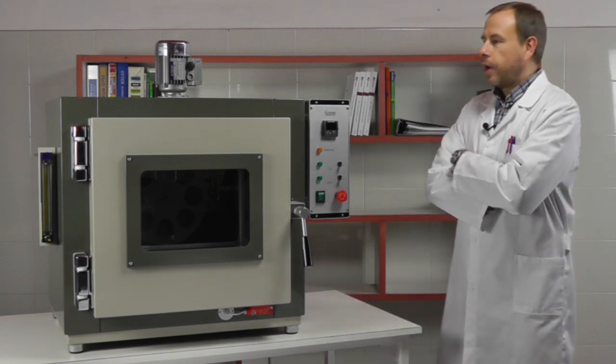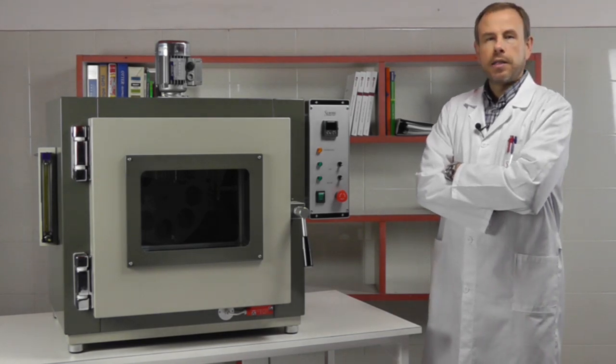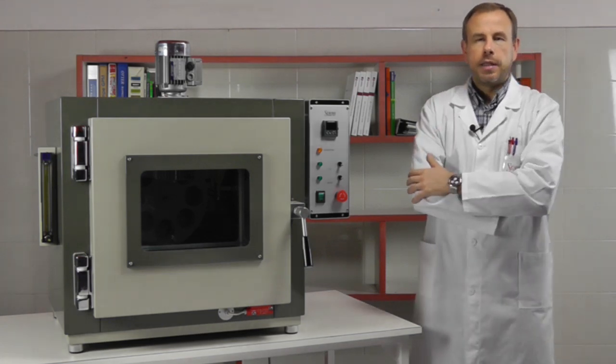As you can see, the oven looks very solid and robust. The outside is powder painted steel, while for the inside we use only top quality stainless steel.